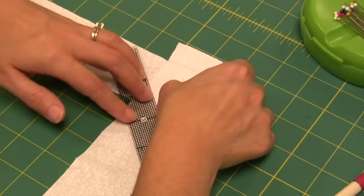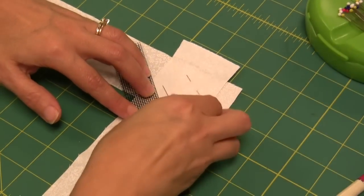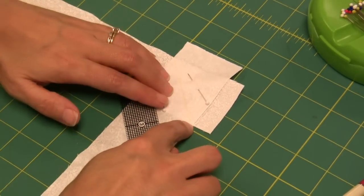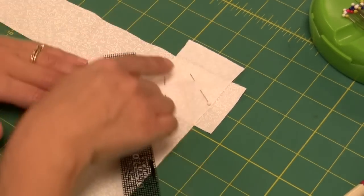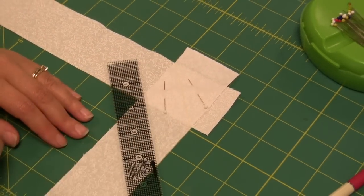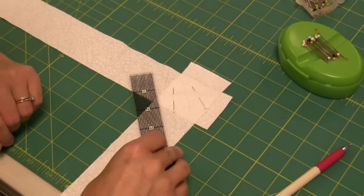Now the trick to having a perfect join is to make sure that you draw a straight line from that corner to that corner, but also to stitch right on top of that line from corner to corner. We'll go to the sewing machine so we can show you how to do that.